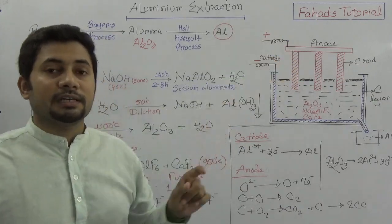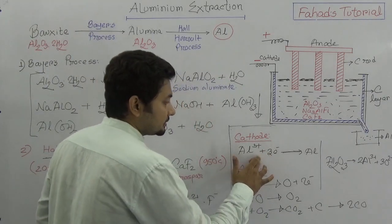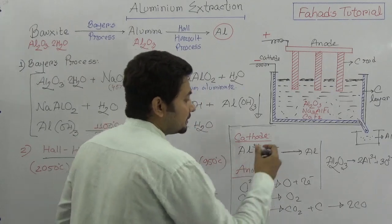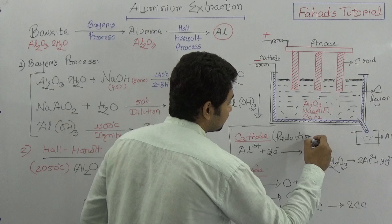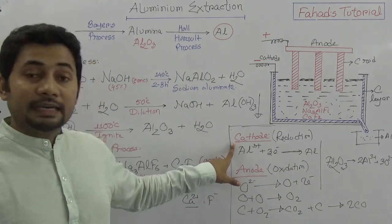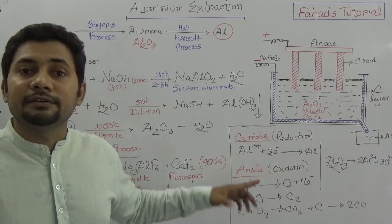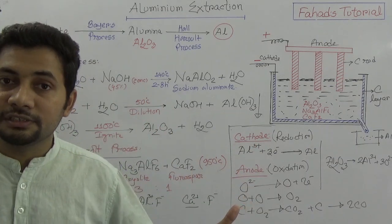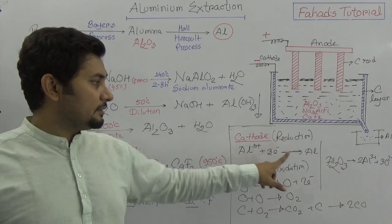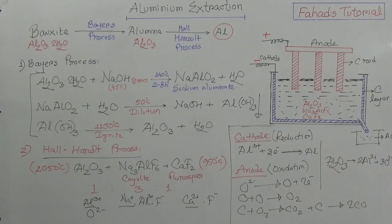The carbon rod works as the anode, and at the cathode, electrons are accepted — that is, reduction occurs. Cations migrate to the cathode and accept electrons. So at the cathode there is reduction, and at the anode there is oxidation. Releasing electrons is oxidation; gaining electrons is reduction. This is how liquid aluminium is obtained in this electrolysis process.